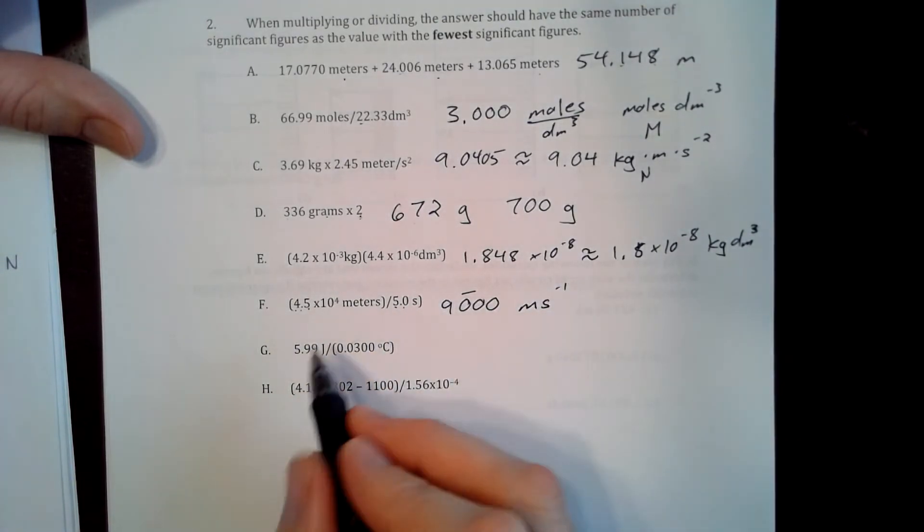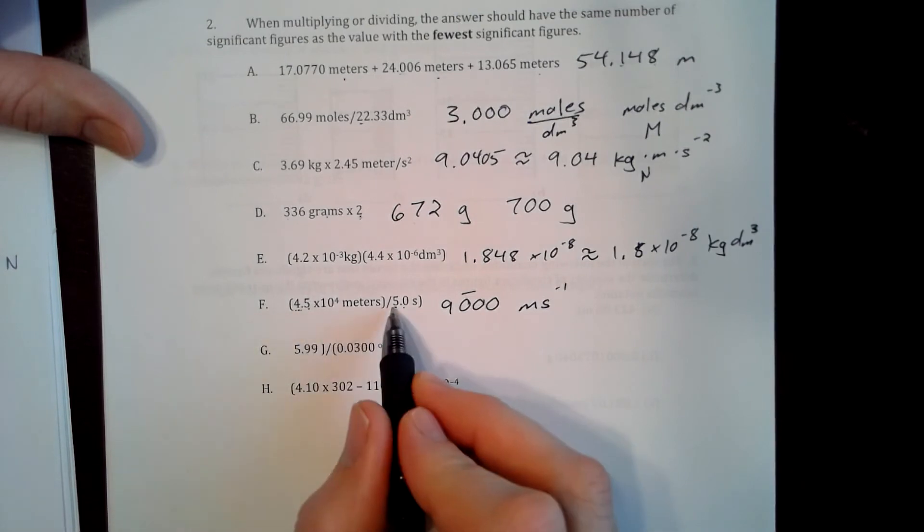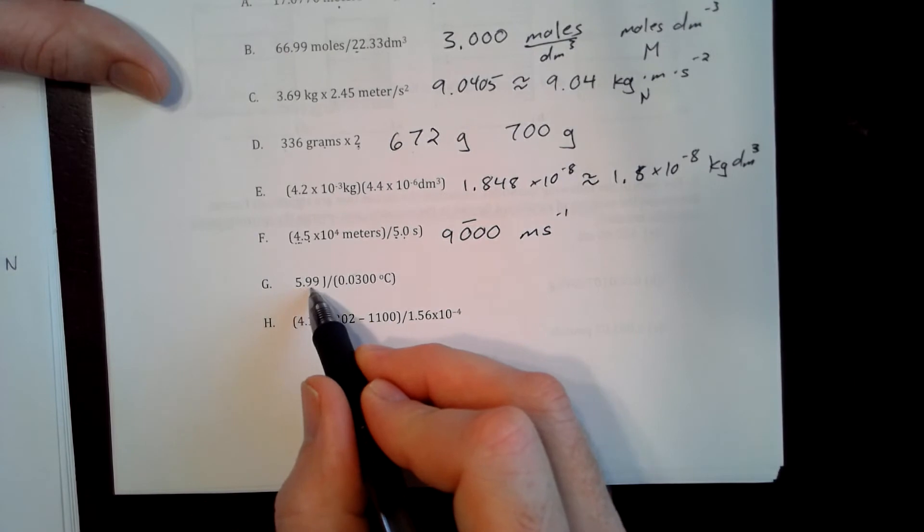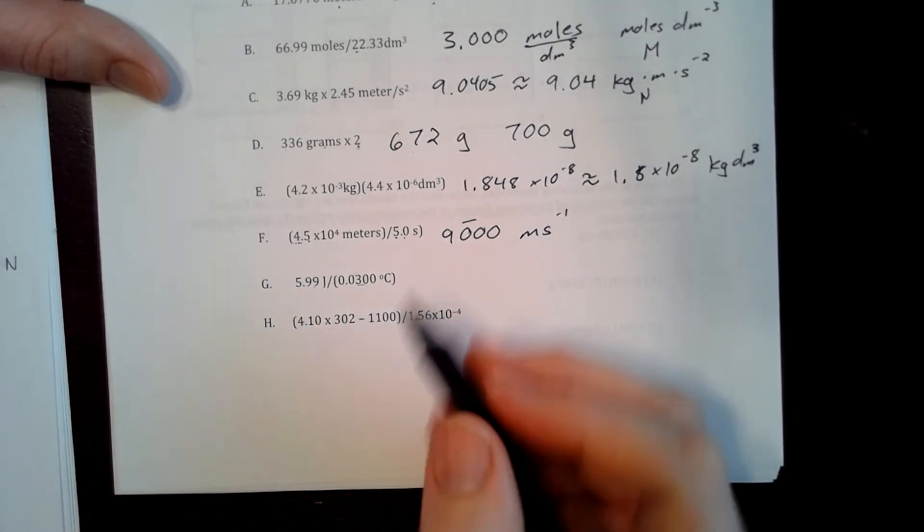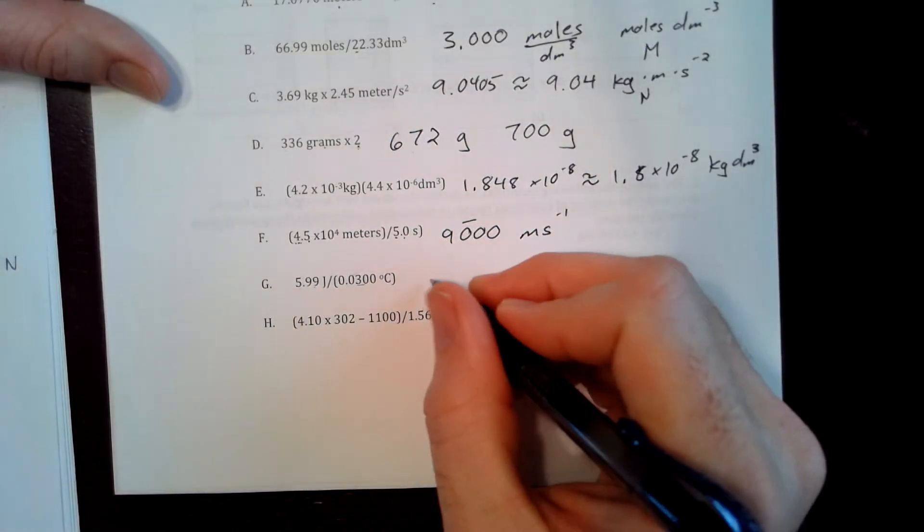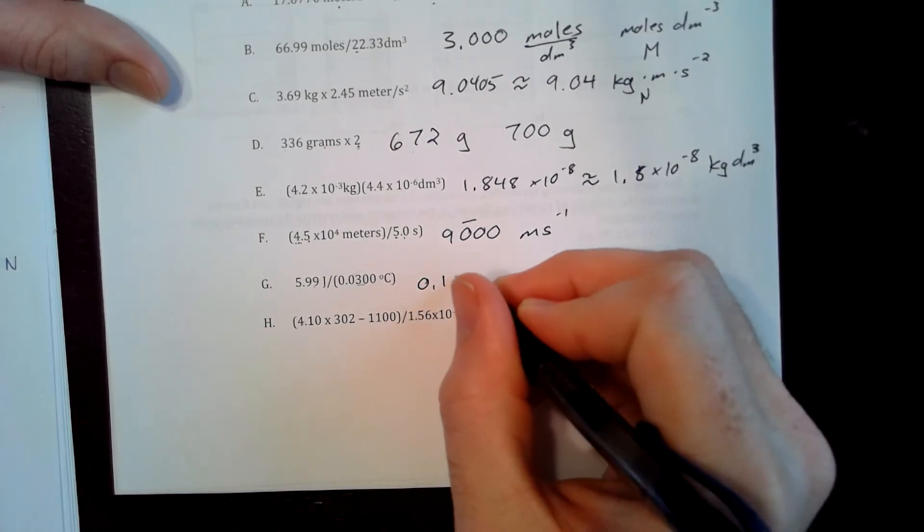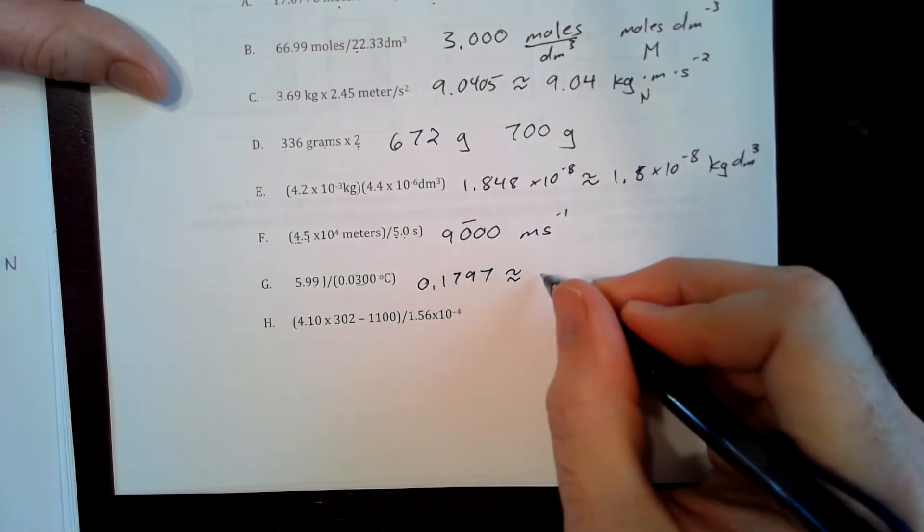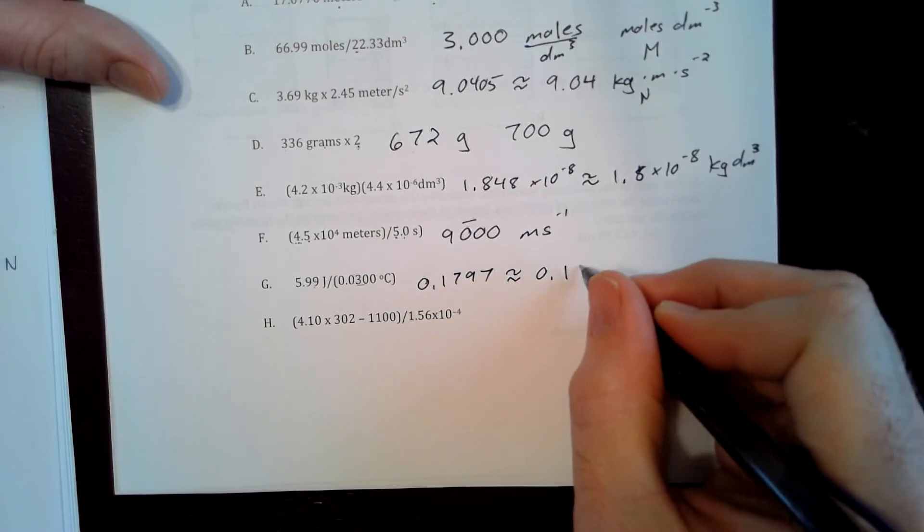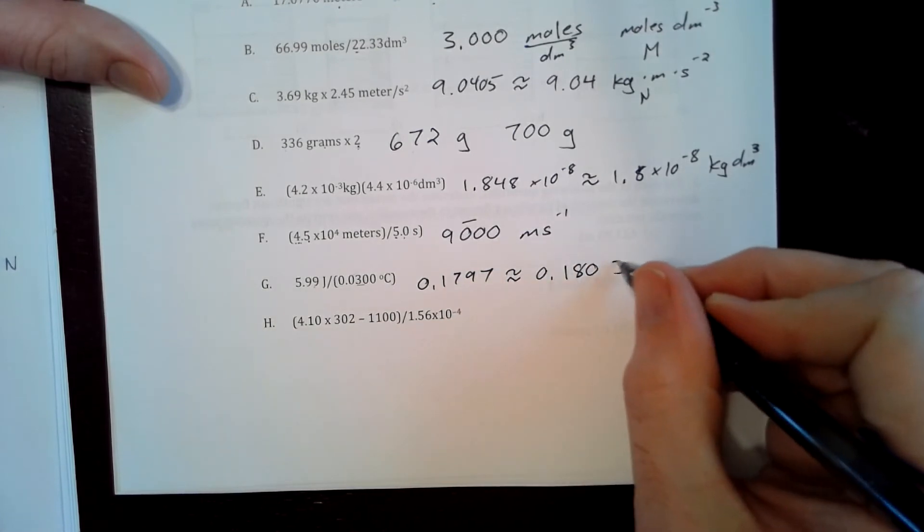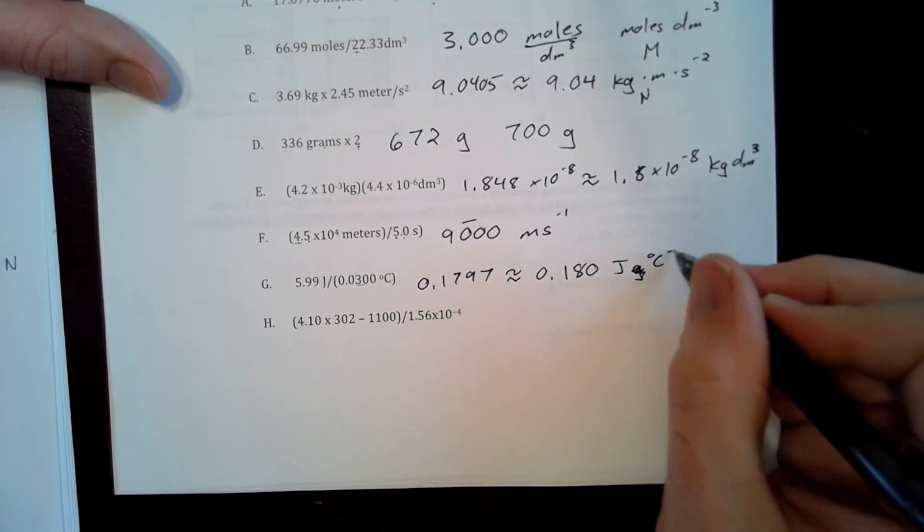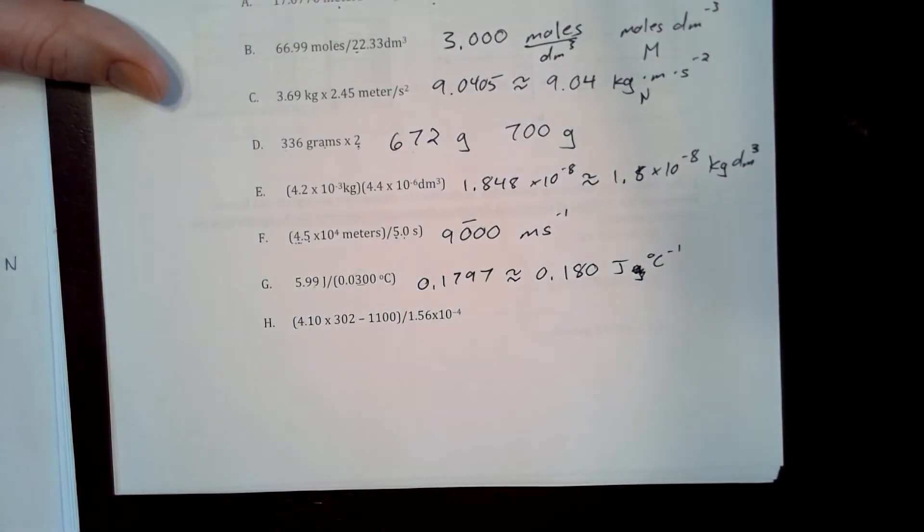And we have three sig figs here and three sig figs here. So our answer has three. So we type it in the calculator and our calculator gives us this. Let's approximate that to 0.180 joules per degree Celsius, inverse degree Celsius.